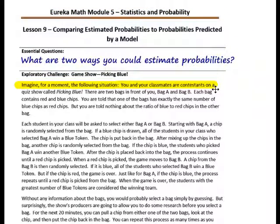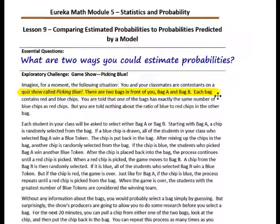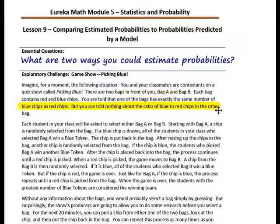Imagine the following situation. You and your classmates are contestants on a quiz show called Picking Blue. There are two bags in front of you — bag A and bag B. Each bag contains red and blue chips. You are told that one of the bags has exactly the same number of blue chips as red chips, but you are told nothing about the ratio of blue to red chips in the other bag.